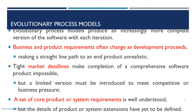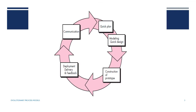This is a diagrammatic representation of the evolutionary process model. First, we communicate with stakeholders such as customers. After communication, quick planning is done, then designing, then construction of a prototype, followed by deployment, delivery, and feedback. After each increment, the customer provides feedback for the next increment.